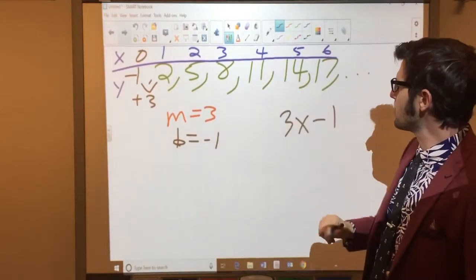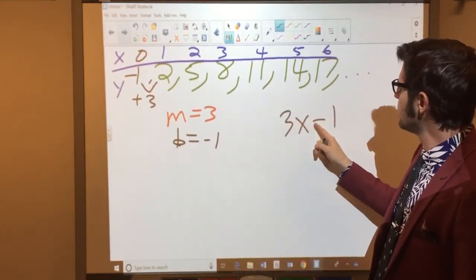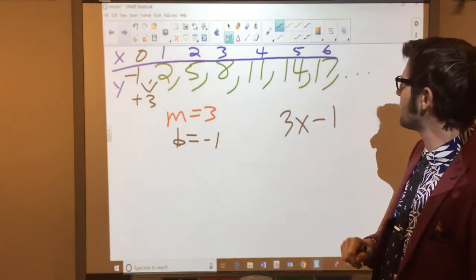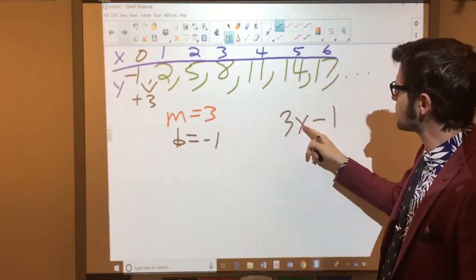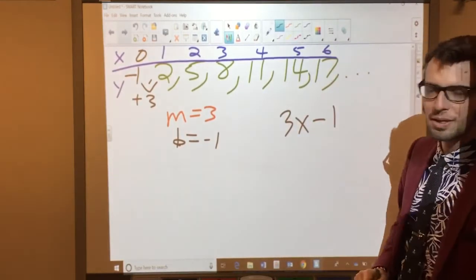Let's see if it works. The fourth term in this sequence should be 4 times 3, which is 12 minus 1. That's 11. The sixth term should be 6 times 3, which is 18 minus 1. That's 17.